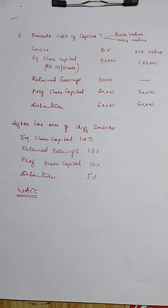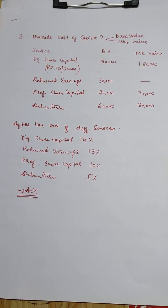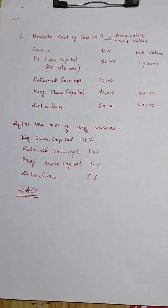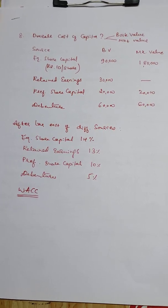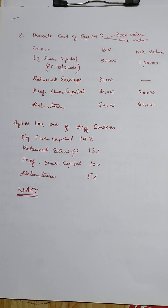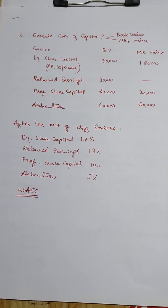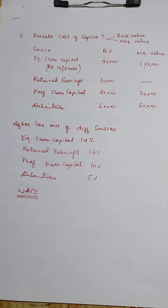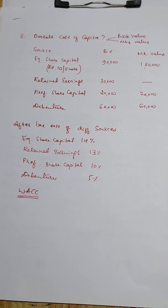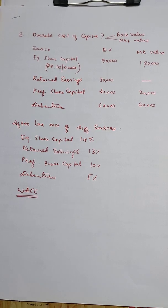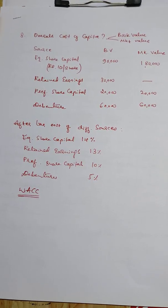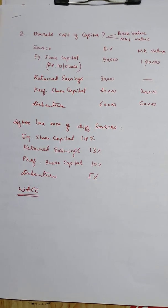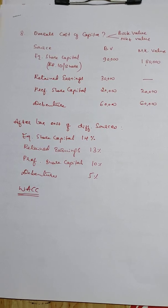Book value for equity share capital is 90,000 and market value is 1,80,000. Retained earnings: book value is 30,000; there is no market value for retained earnings. Preference share capital: book value 20,000, market value 20,000. Debentures: 60,000 for both book value and market value.